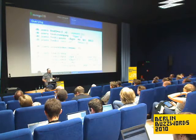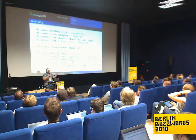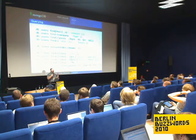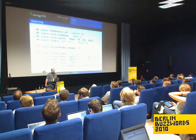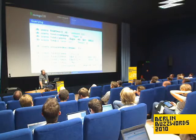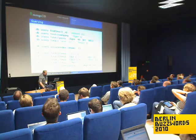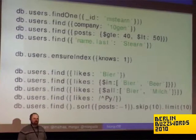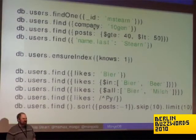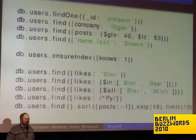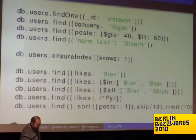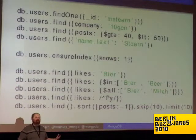Here's what it looks like to write queries. Lookup by ID: write an object with ID mstern. The difference between find and findOne is that find returns a cursor you can iterate over, returning batches, handling all that for you, whereas findOne just takes the first result. We do support range queries — of all the limitations of NoSQL databases mentioned earlier, the only one we don't support is transactions.